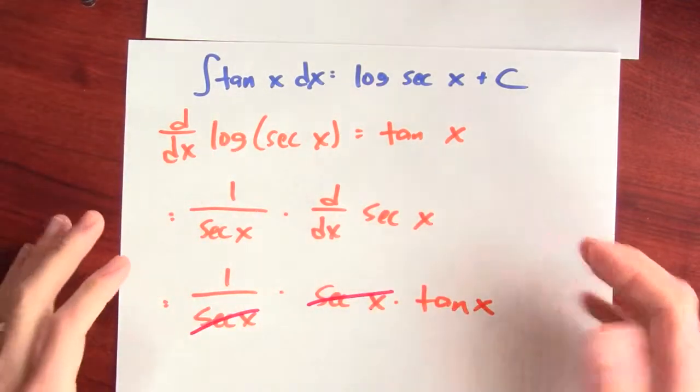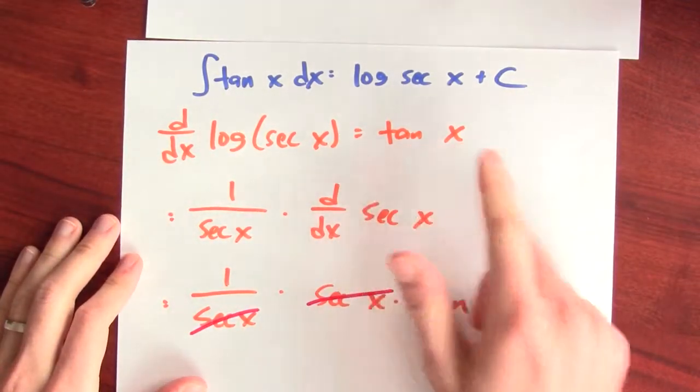So I've found an anti-derivative for tangent. But it's totally opaque as to how somebody would ever have gotten that as the anti-derivative of tangent. Yet once that candidate anti-derivative was revealed to us, we can verify that it's truly an anti-derivative just by differentiating it and checking that it really gives us tangent.